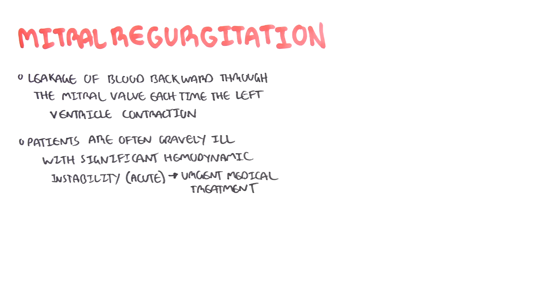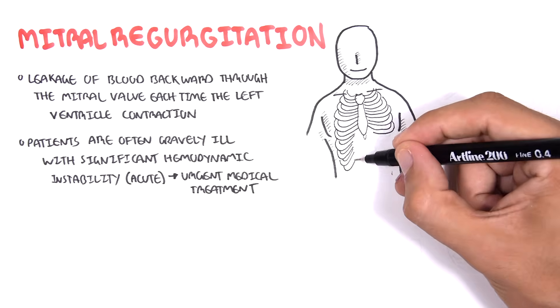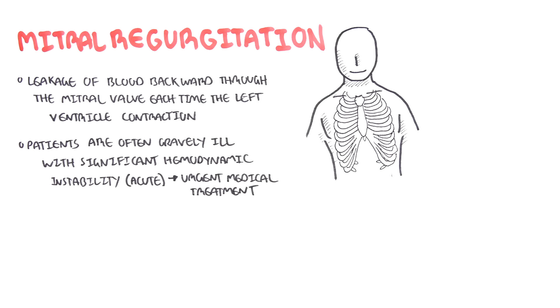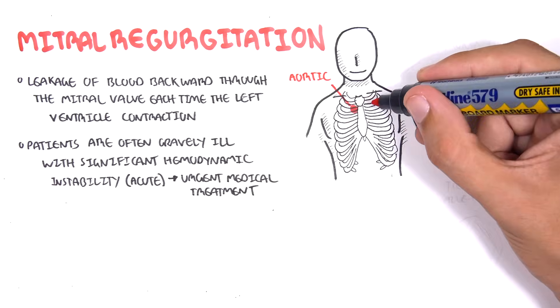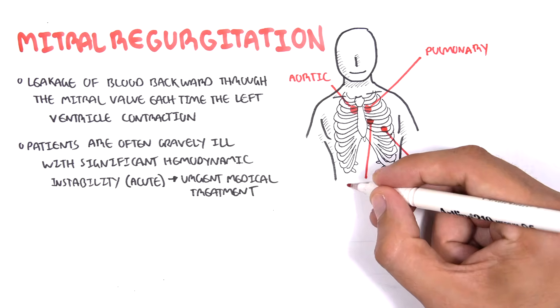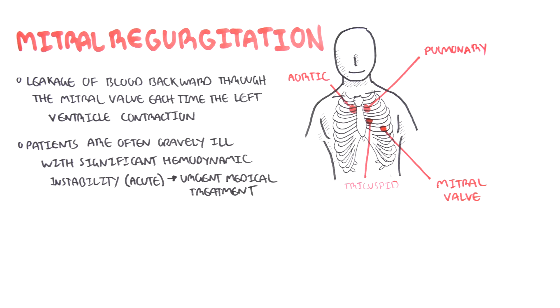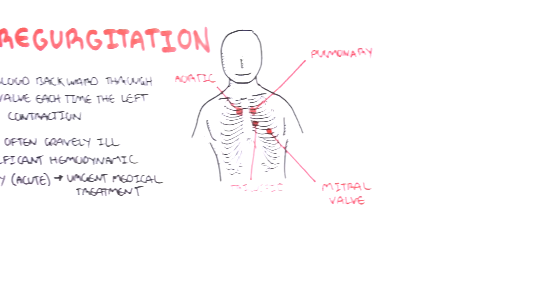All the valves of the heart can be heard most prominently in certain areas across our thorax. The aortic valve is best heard in the right second intercostal space parasternal. The pulmonary valve is best heard on the second intercostal space on the left parasternal. The tricuspid valve is at the left fourth intercostal space parasternal, and the mitral valve at the left fifth intercostal space mid-clavicular.